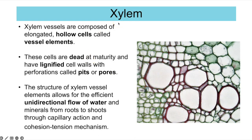Looking at xylem tissue, xylem vessels are composed of elongated hollow cells called vessel elements. In cross-section, the hollow xylem vessel is shown here in red. These cells are dead when mature and have lignified cell walls — lots of lignin makes them waterproof and tough. Through the tube there are also perforations called pits or pores. This structure allows efficient unidirectional flow of water and minerals from roots to shoots through capillary action and cohesion-tension mechanisms, forming one continuous long hollow tube through which water flows as a continuous column.